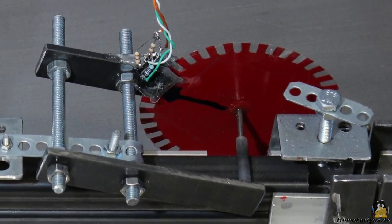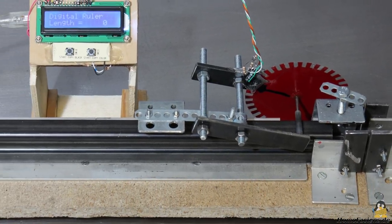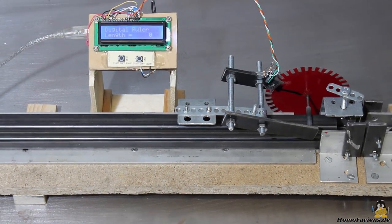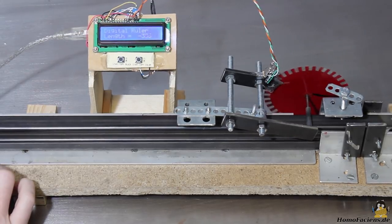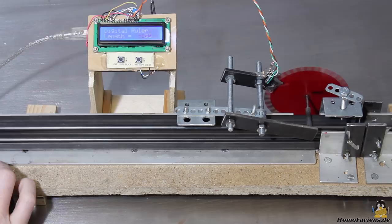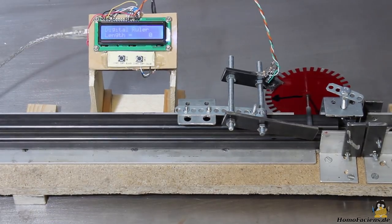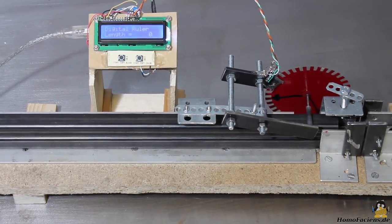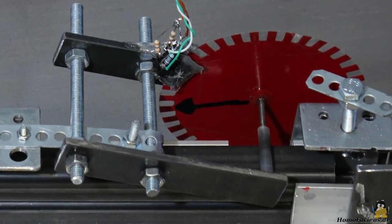You can check if pulses are skipped with a simple experiment. Set a mark at one of the teeth. Now move the square tube to the right quickly and slowly back to the left. If the counter reached zero, the marked tooth must be on the initial position. As you can see, it isn't, the movement to the right was too fast.